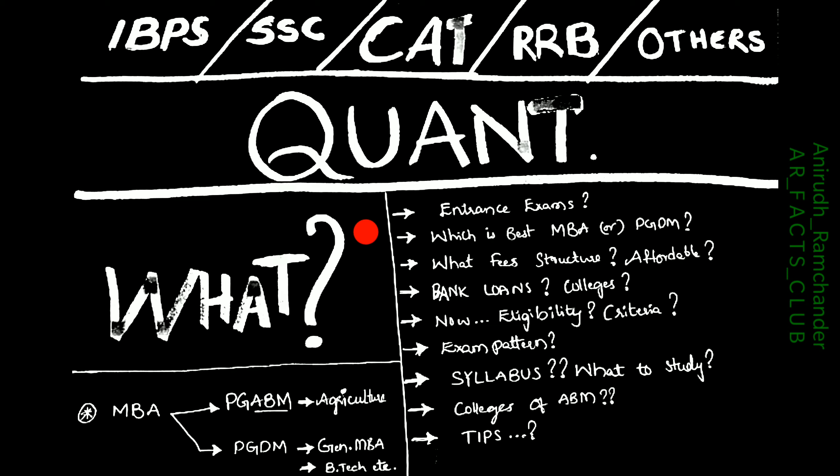By the end of this video, I will make sure you have no confusion about it. Everything will be clearly explained. MBA is a postgraduate course consisting of PGABM and PGDM. ABM is Agri Business Management, specifically for agriculture students, and PGDM is postgraduate diploma in management. All final year students and UGC-completed students can join.